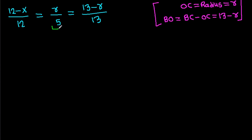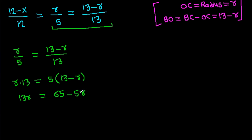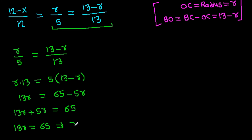We have R over 5 equals (13 minus R) over 13. Cross multiplying gives 13R equals 5 times (13 minus R), so 13R equals 65 minus 5R, giving 18R equals 65. Therefore R equals 65 over 18.